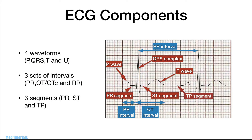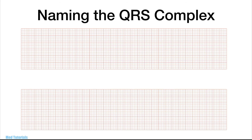Looking at the ECG, we have the following components: four waveforms — the P wave, QRS complex, T wave, and U wave; three intervals — the PR interval, the QT interval (and corrected QT interval), and the RR interval; and three segments — the PR segment, ST segment, and TP segment.